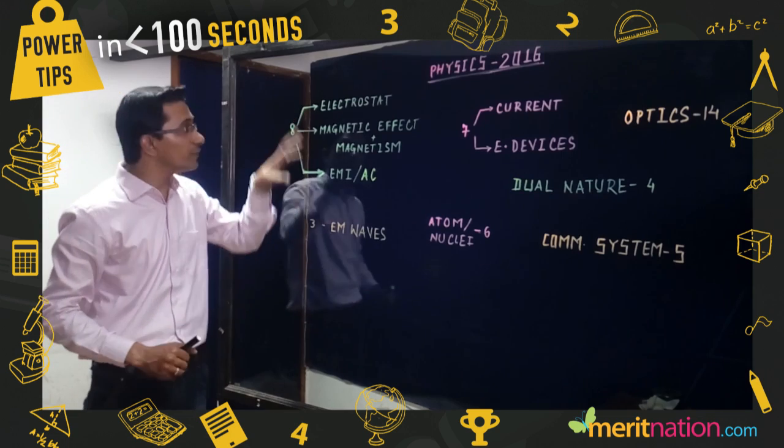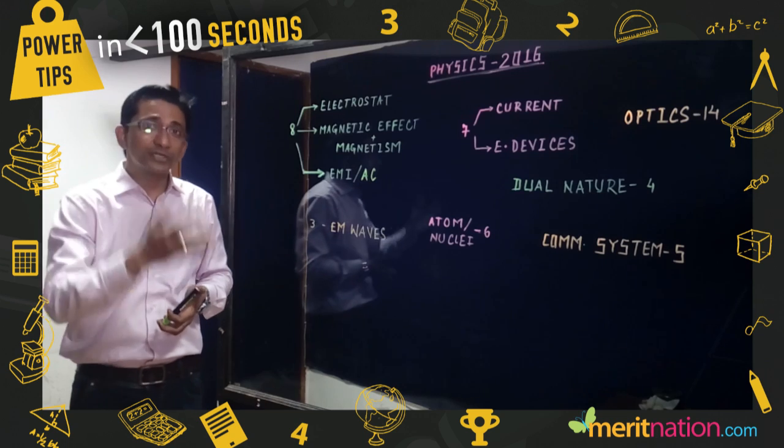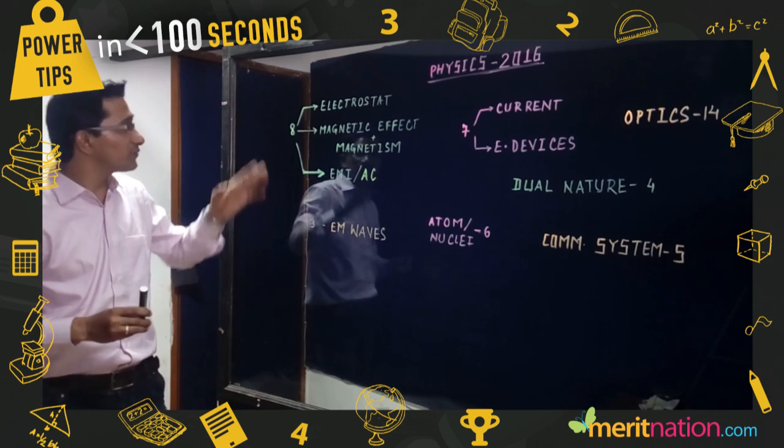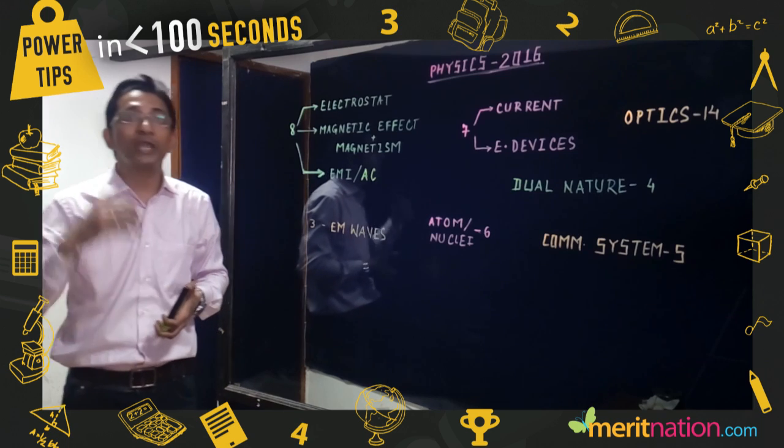When you talk about electrostatics, you have to be clear about electric dipole, Gauss's law, and capacitors. For magnetic effect and magnetism, you need to understand magnetic dipole, Ampere's circuital law, and Biot-Savart's law.